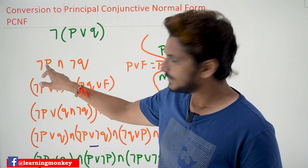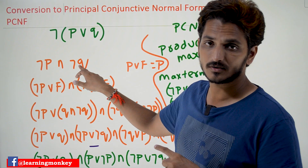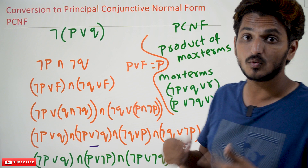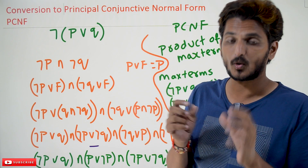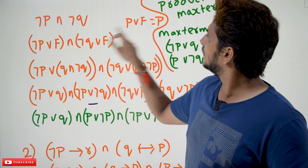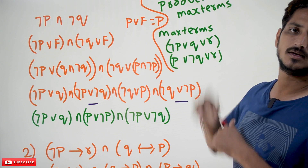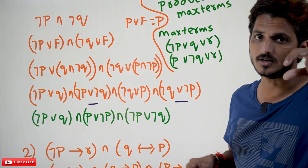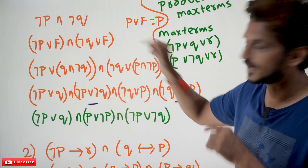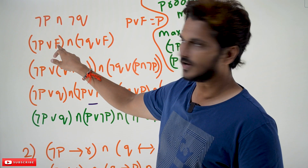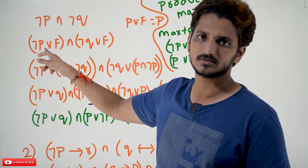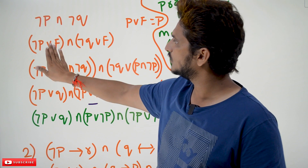So now negation p should be converted into a max term, and negation q should be converted into a max term. Here, how many variables are there? Two variables. How to convert this into a max term — that is the point you need to understand. If you understand that point, it is very easy to convert. p disjunction false is always p, from the equivalence formulas. So this is the point we are going to apply here: negation p disjunction false is always negation p. Instead of negation p, we are writing negation p disjunction false — there is nothing wrong, the same equation we are going to get.